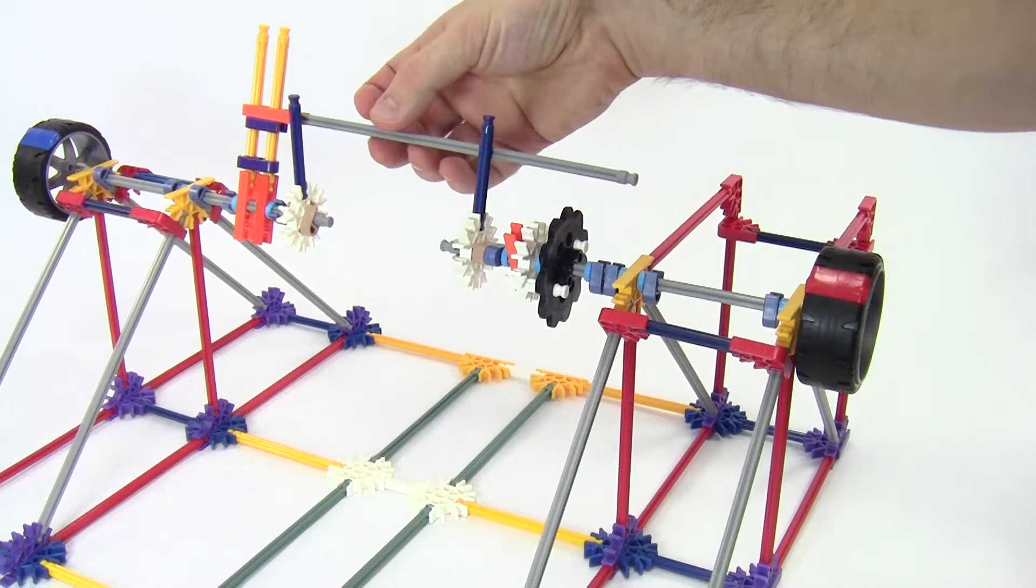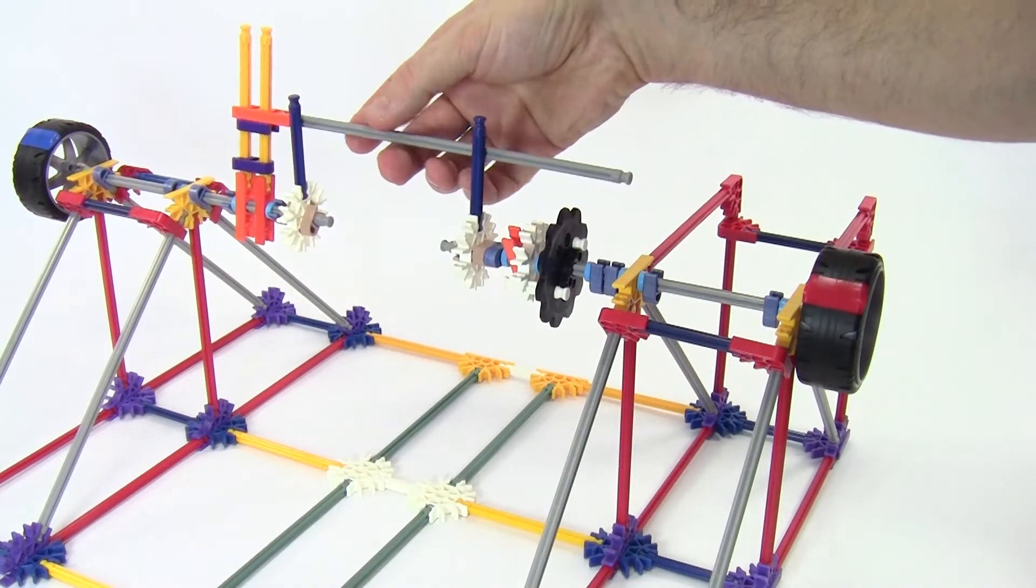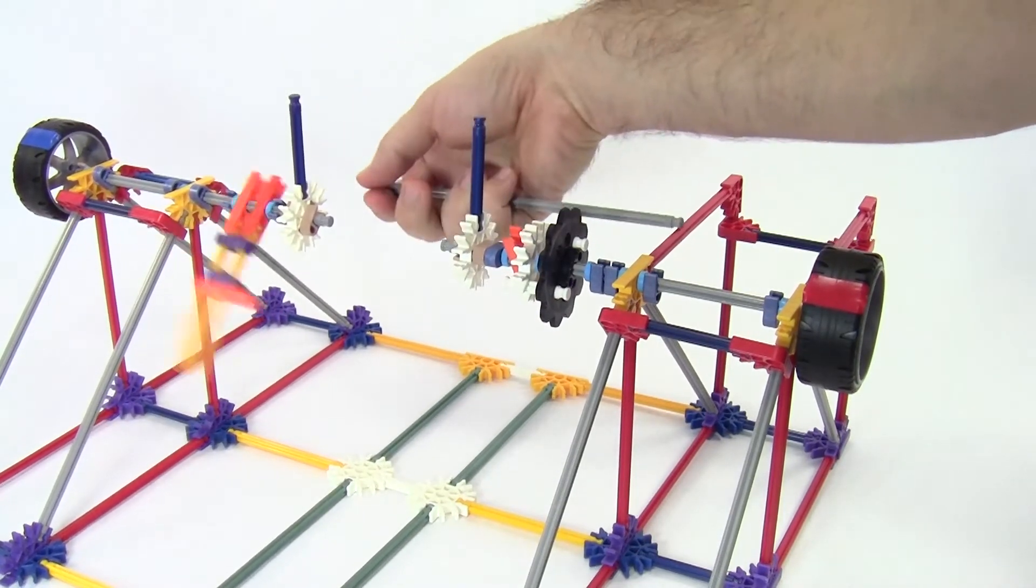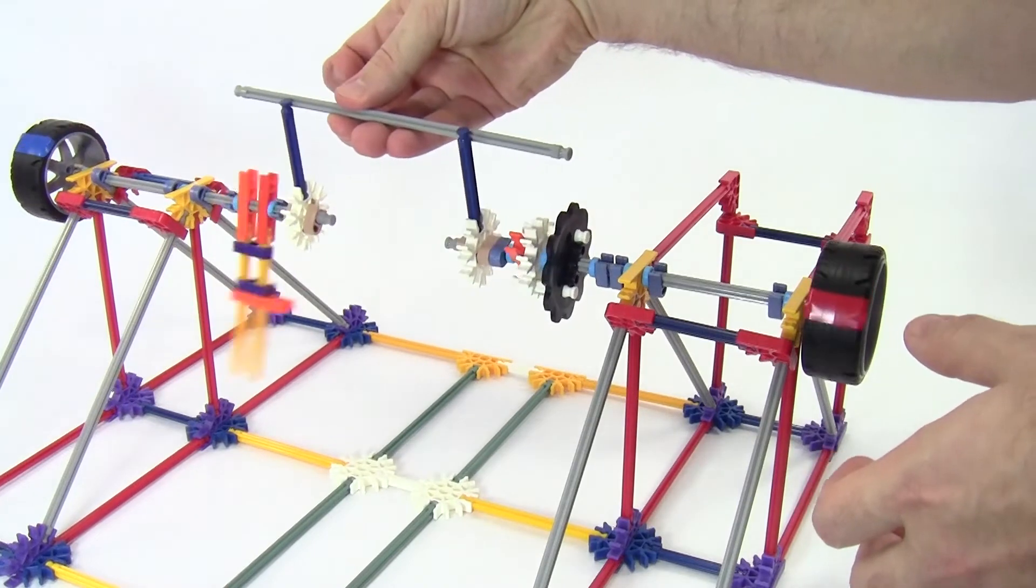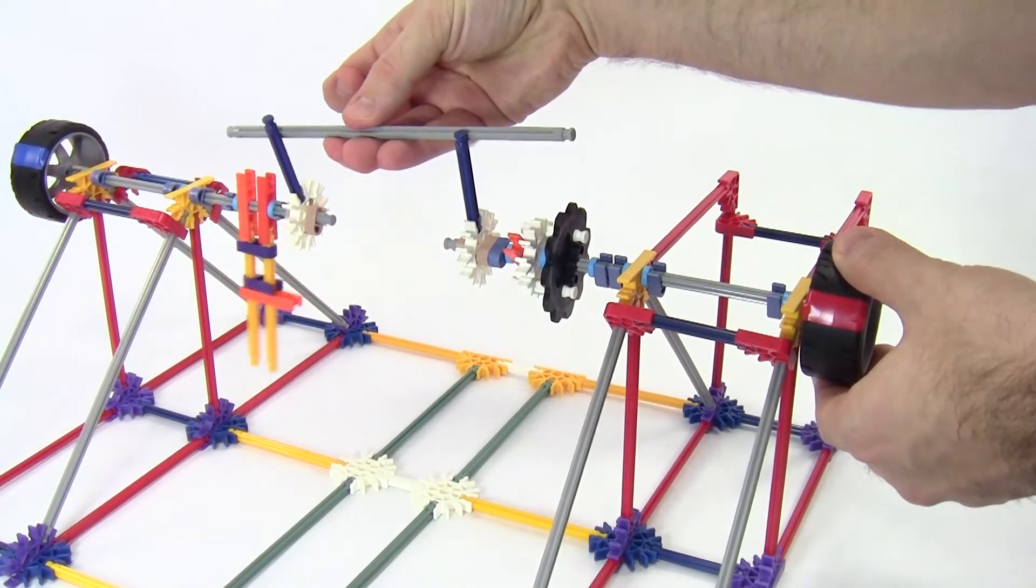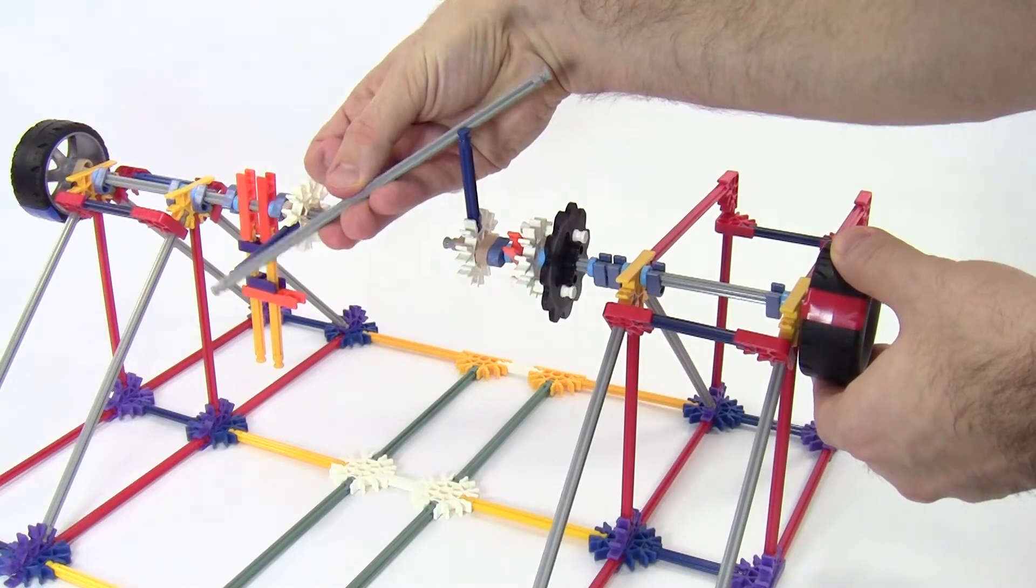Again, watch what happens if I pop this out and push on both wheels. If one of the wheels gets stuck, I can rotate the bar to continue pushing the other one forward.